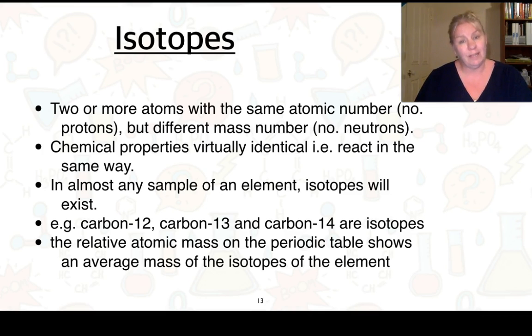Now we touched on before about isotopes. Isotopes are when we have two or more atoms with the same atomic number, so therefore the number of protons, but a different mass number, so we have a different number of neutrons. Chemical properties are going to be virtually identical, so they're going to react in the same way. And almost any sample of any element will have some isotopes that exist.